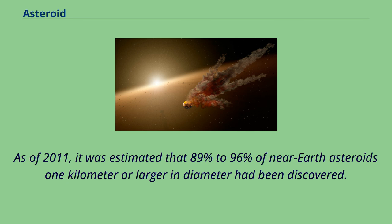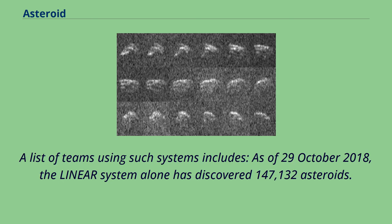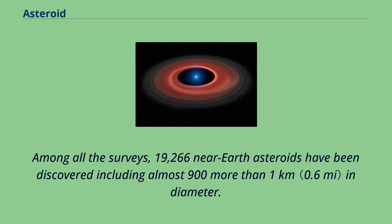As of 2011, it was estimated that 89% to 96% of near-Earth asteroids one kilometer or larger in diameter had been discovered. As of October 29, 2018, the LINEAR system alone had discovered 147,132 asteroids. Among all the surveys, 19,266 near-Earth asteroids have been discovered, including almost 900 more than 1 kilometer in diameter.